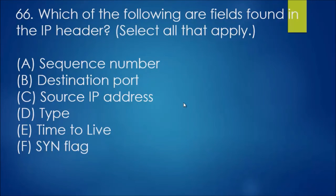Question 66: Which of the following are fields found in the IP header? Select all that apply. It's a matter of reading the Cisco textbook, finding out information on this, basically eliminating what isn't part of it and knowing what is part of the IP header. In this case, it is source IP address and time to live.